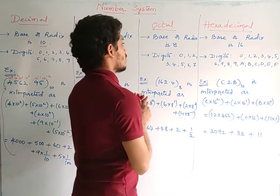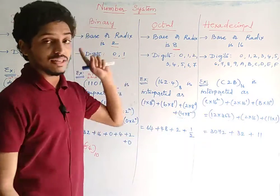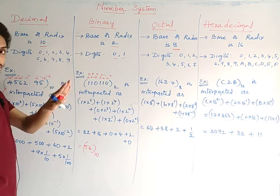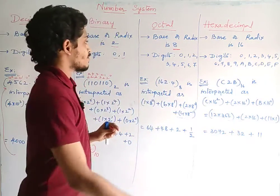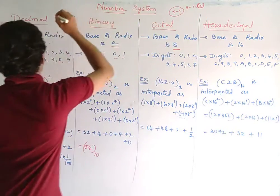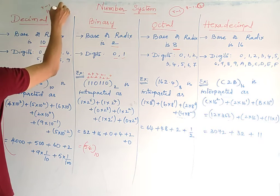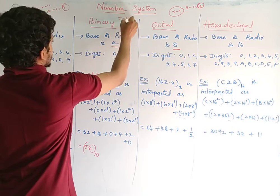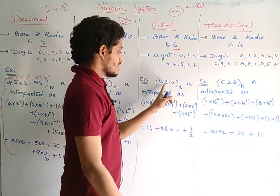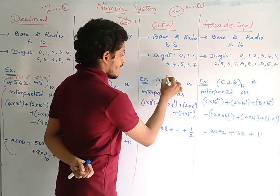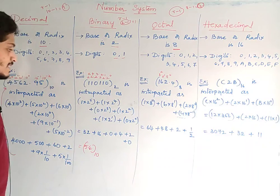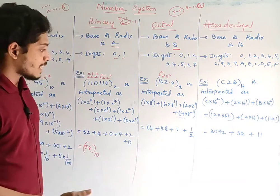For the octal number system, the base or radix is 8, which means 8 digits are used: 0 to 7. The highest digit is 8 − 1 = 7. For decimal the highest digit is 10 − 1 = 9. For binary, the highest digit is 2 − 1 = 1. The formula is R − 1. For an octal number like 162.4 to base 8, we use 8 power 0, 8 power 1, 8 squared as place values to find the decimal equivalent.